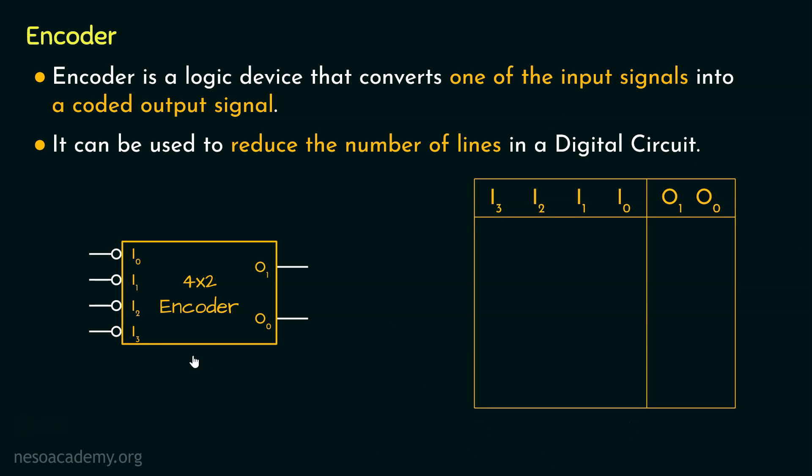Now interestingly, in this particular encoder, if you notice, all the input signals are active low. That is, if we feed 1 to any of these, the input line to which 1 is being fed will be treated as inactive. On the other hand, if we feed 0, the input line which receives 0 will be treated as active.